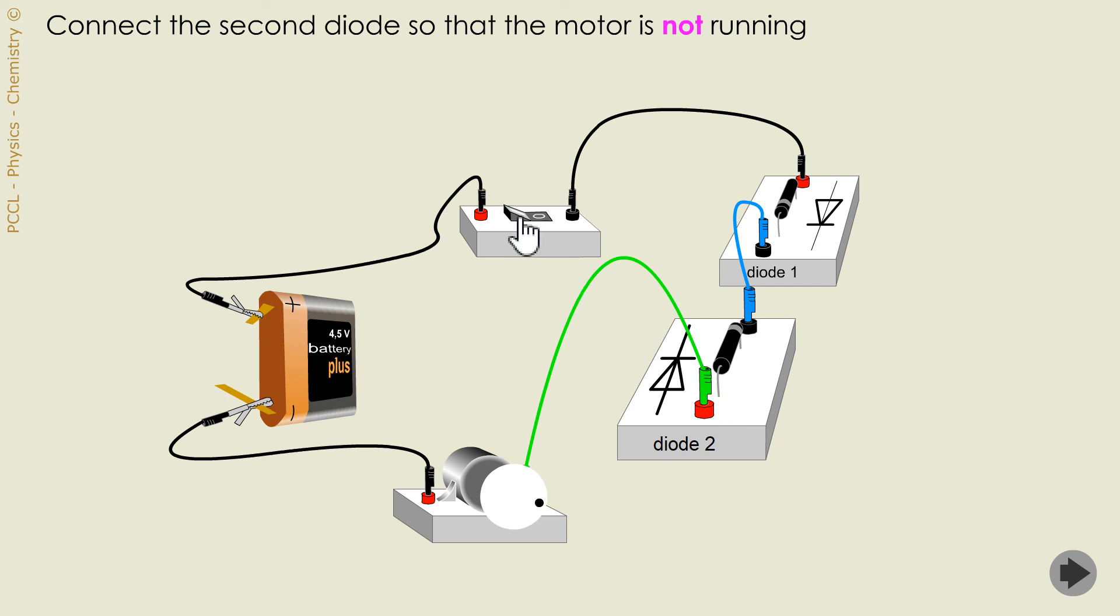And I check. Indeed, if this diode opposes the flow of current, the motor no longer turns.